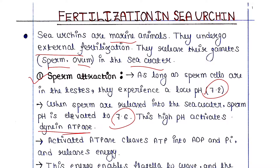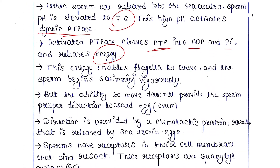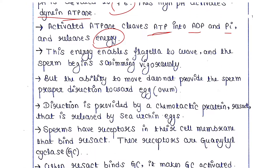The activated ATPase cleaves ATP into ADP and Pi, releasing energy. This energy enables the flagella to wave, and the sperm begins swimming vigorously.